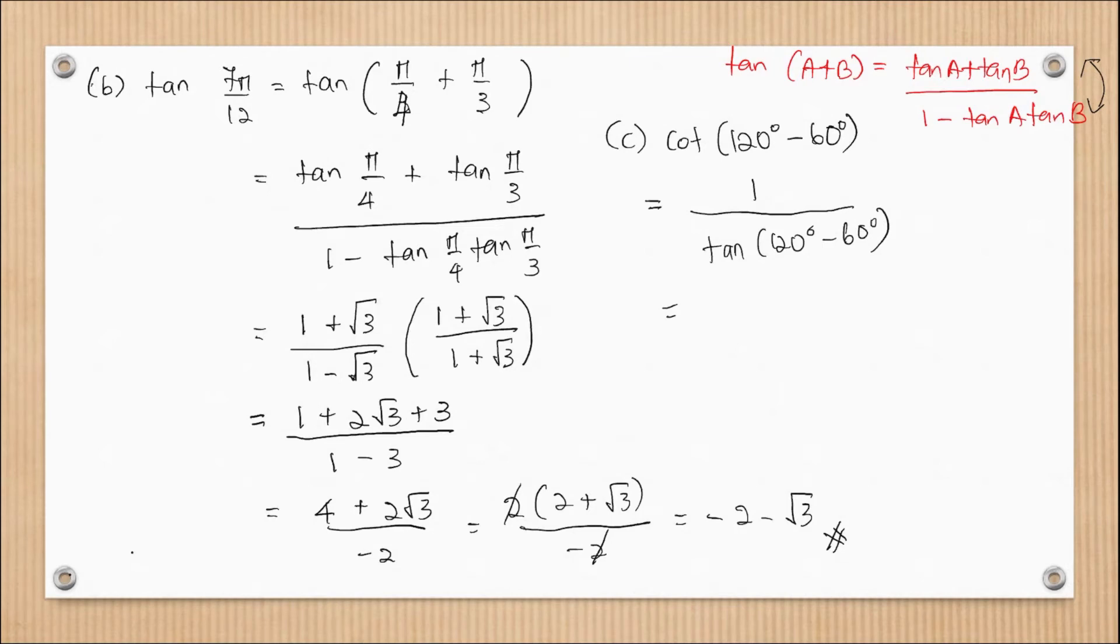And then use the compound angle again, but now the position is swapped. It will be (1 + tan(120°)tan(60°))/(tan(120°) - tan(60°)). So be careful with the sign. And then use your calculator. 1 plus tan(120°) is negative √3 times √3.